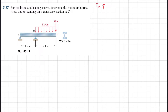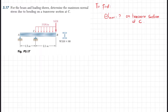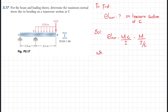We have been asked to find the maximum normal stress on the transverse section at C. We know that maximum stress is equal to M·c/I, or equivalently M divided by (I/c), where I/c equals S, the section modulus. We will use the section modulus in this problem.